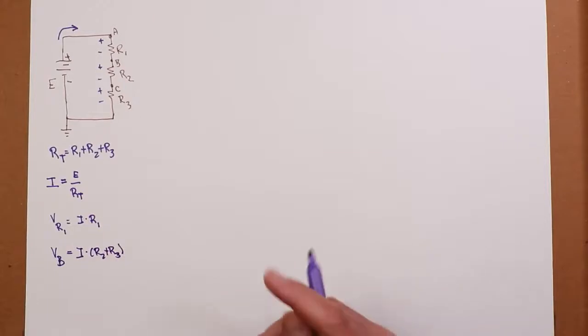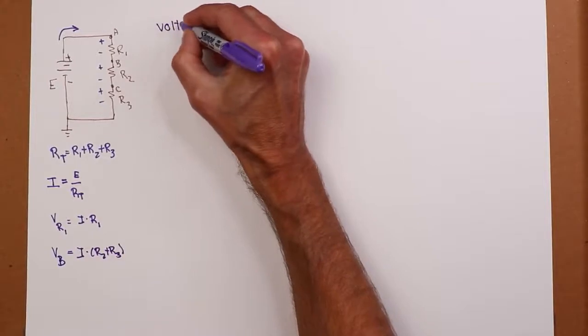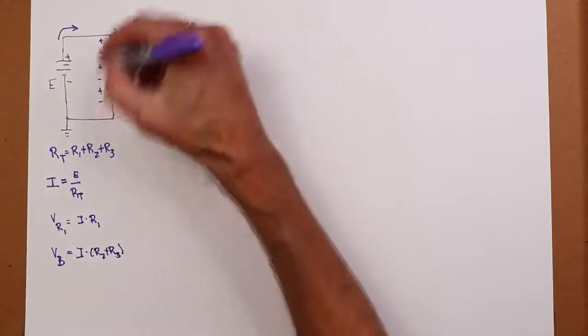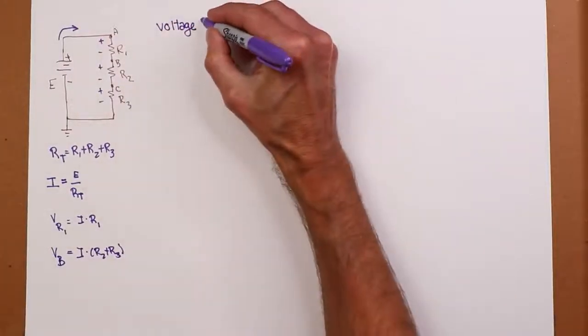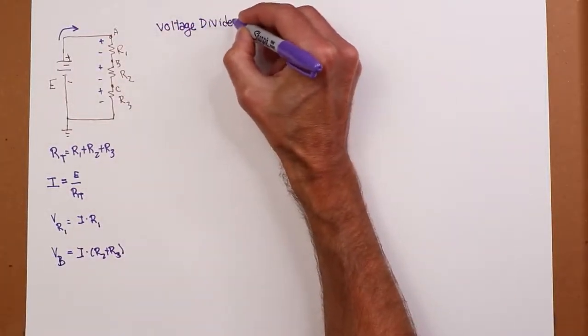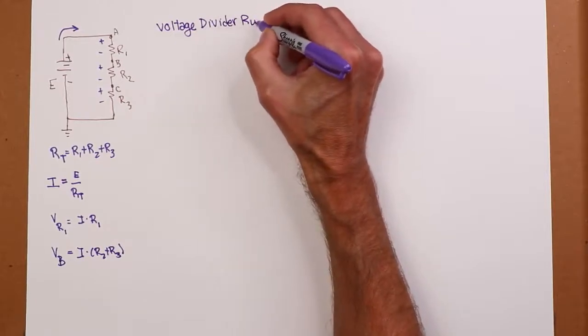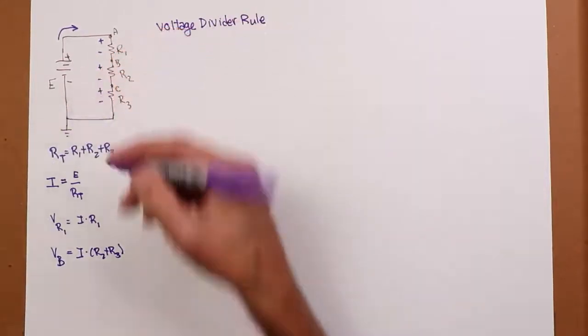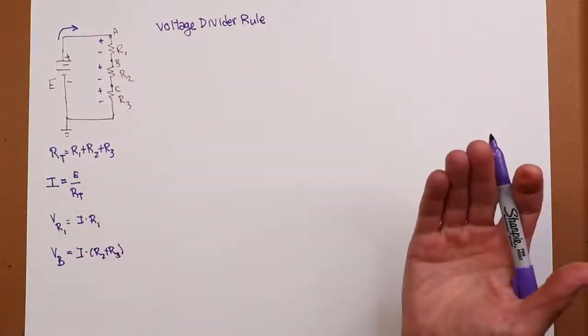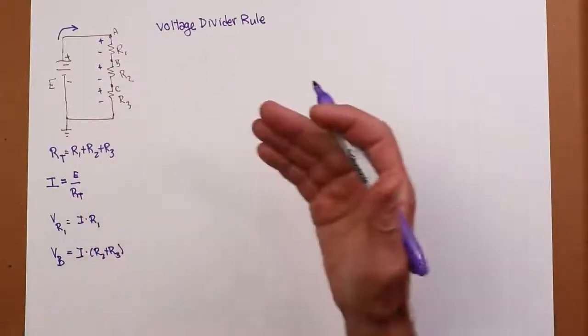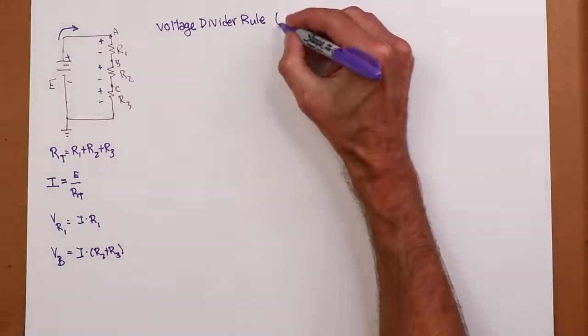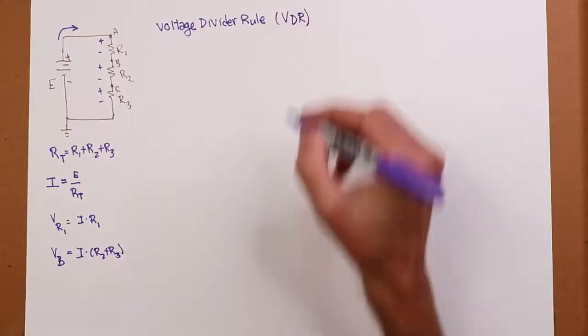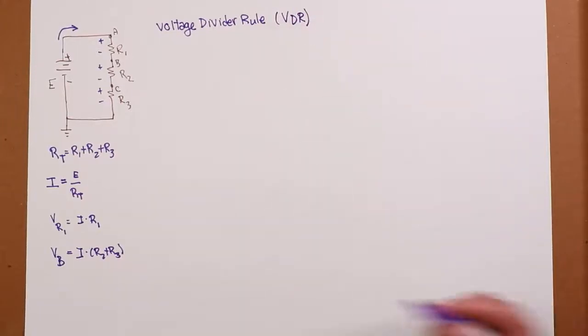Now it's not particularly difficult, but there actually is a shortcut. And this is the voltage divider rule. So this voltage divides up according to the size of the resistors. Maybe you didn't think about it this way, but because the current is a constant, the bigger the resistor, the larger the voltage. So the voltage divides up in proportion to the size of the resistors.